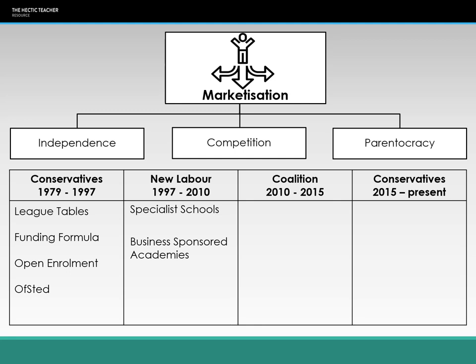Business sponsored academies created more independence for schools. By being an academy it lessened the control of the local authority, and having businesses involved created independence in how the school was structured, the infrastructure, what resources were available. For example, Apple schools would be iOS schools using iPads and Macs, whereas a Google school would use Google Classroom and Chromebooks. So business sponsored academies created more independence for schools to shape themselves the way they wanted.